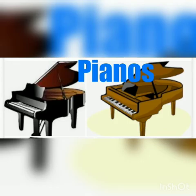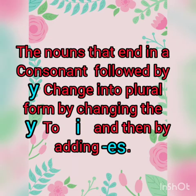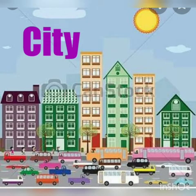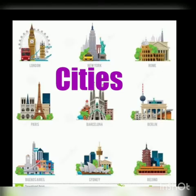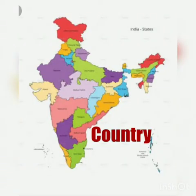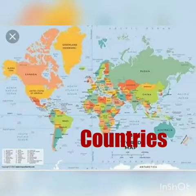The nouns that end in a consonant followed by y change into plural form by changing the y to i and then adding es. For example: city → cities, country → countries.